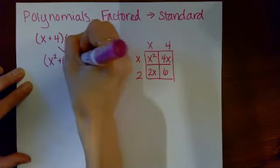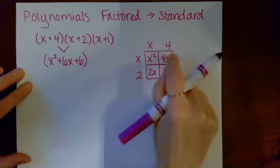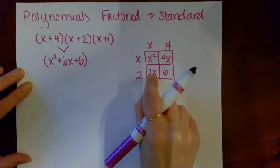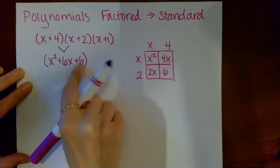plus six. This six x comes from the sum of four x and two x. x squared and six are these terms here.